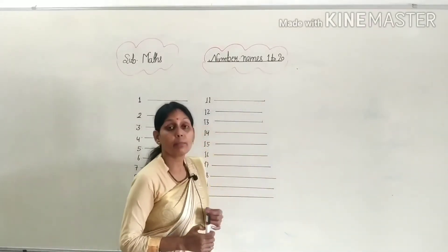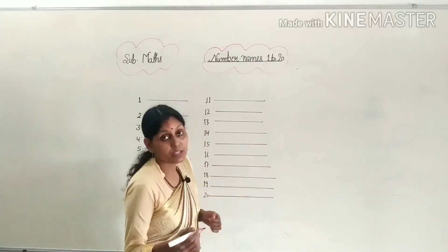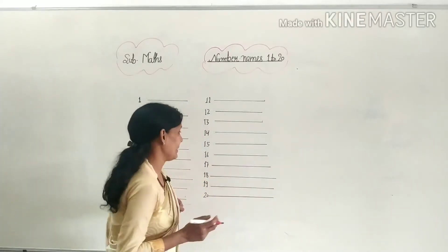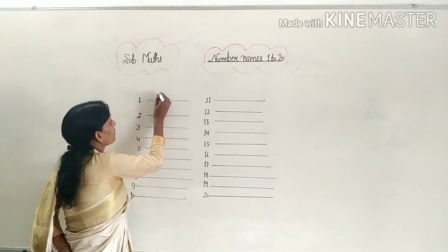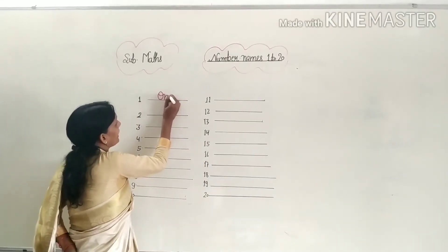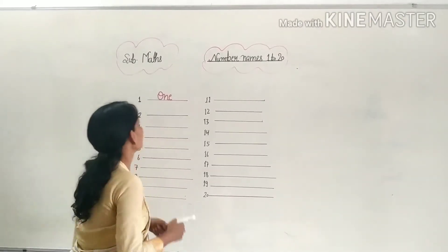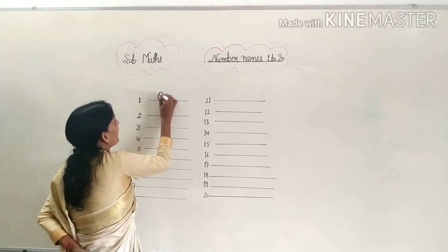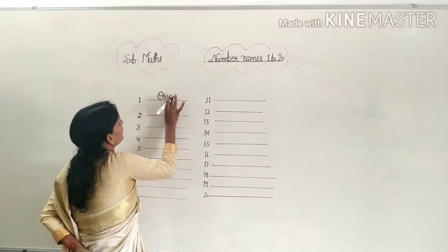Let us start from number 1. We will start from number 1. First we will write number 1. What is the spelling of 1? O-N-E. That is the spelling of 1: O-N-E.